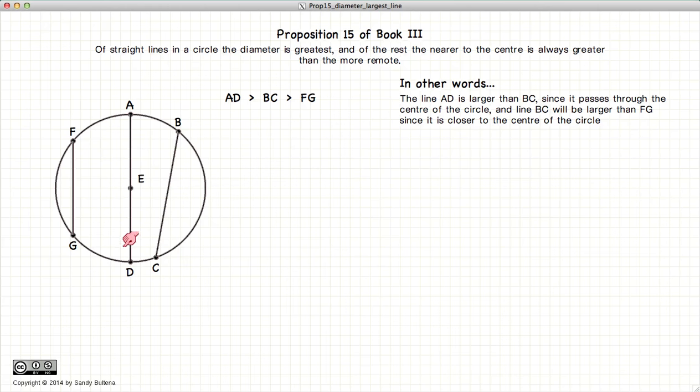of the lines drawn in a circle, the largest line is the one that passes through the center of the circle, or the diameter, and the further the line is away from the center, the smaller it is.